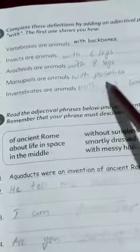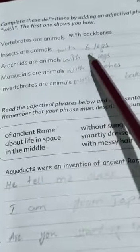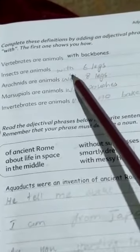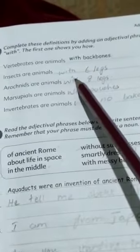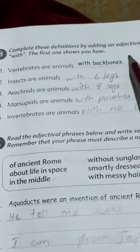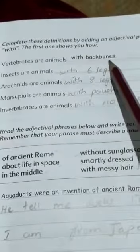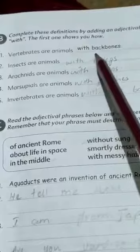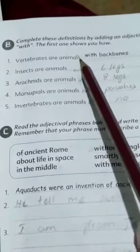So, dekhein students, is example mein hamare paas noun jo hai woh se pehle. Preposition jo hai woh start ho rahi hai adjectival phrase ke saath. Vertebrates are animals with backbones. So, yeh with backbones jo hai yeh hamare paas kya hai? Adjectival phrase hai aur start kis se ho raha hai? With se. Jo ke ek preposition hai.